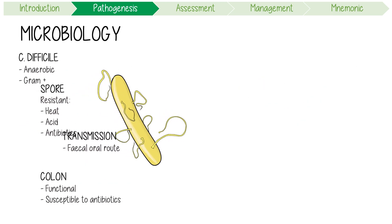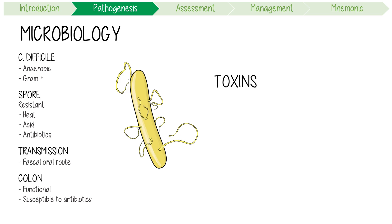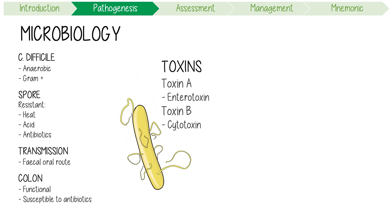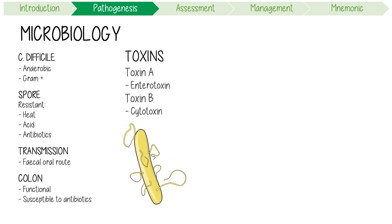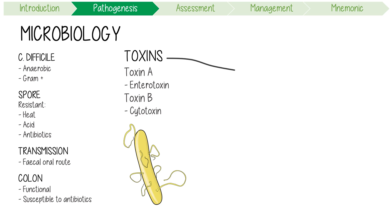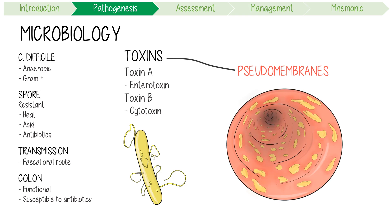C. diff can actually produce two toxins. Toxin A, which is an enterotoxin, and toxin B, which is a cytotoxin. Together, they disrupt the epithelial cell barrier and cause the formation of pseudomembranes. These are whitish, yellow plaques in the colonic mucosa, which can grow large and coalesce to cover the entire colonic wall.